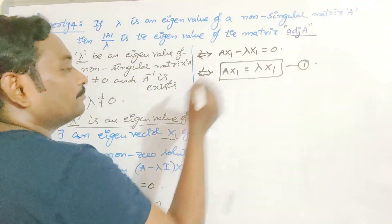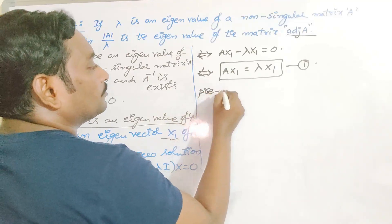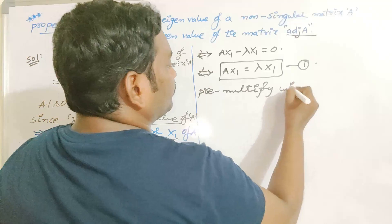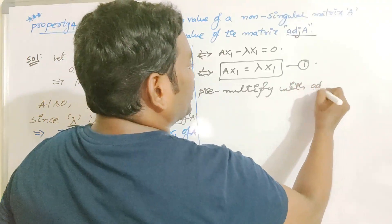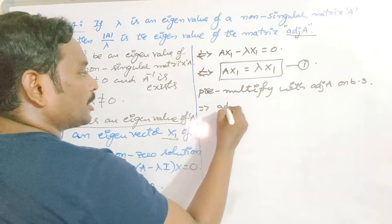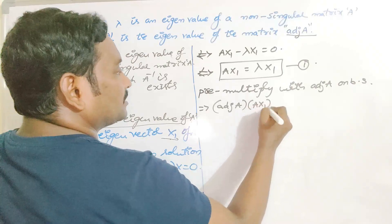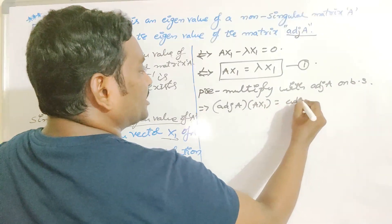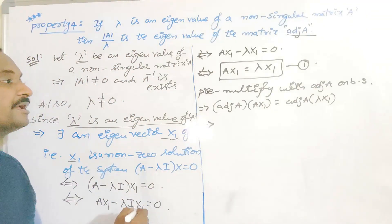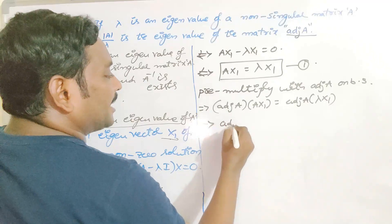Pre-multiplying both sides by adjoint A gives: adjoint(A) · A · x1 is equal to adjoint(A) · lambda · x1. By using the associative law in matrix products, I am writing this as adjoint(A) · A · x1 on the left side, and since lambda is a constant, it can be written outside, giving lambda times adjoint(A) times x1 on the right side.